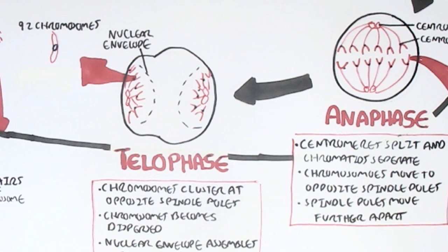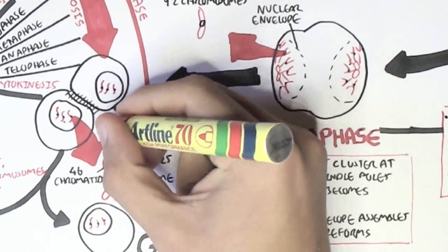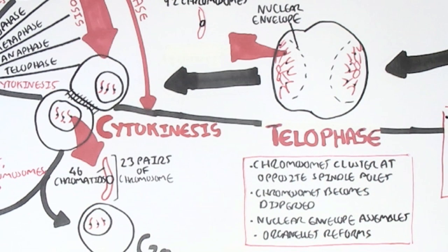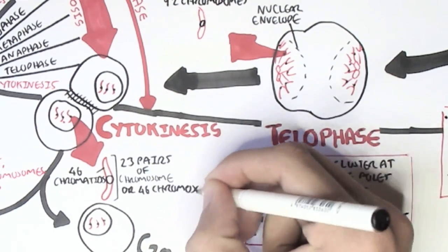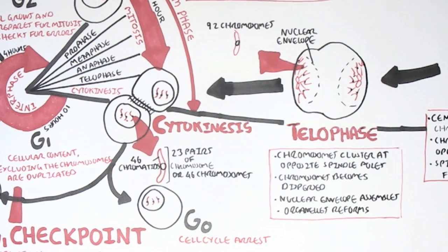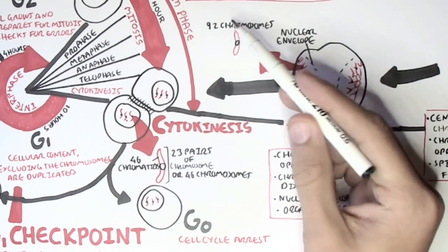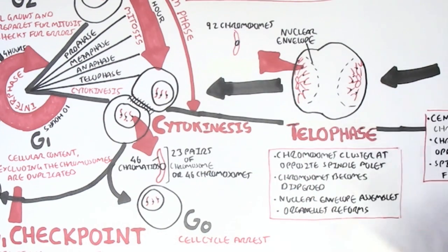This cell will then enter the last phase of M phase — not mitosis, but M phase — known as cytokinesis. Cytokinesis is not part of mitosis, but it is part of M phase, and it is essentially the separation of the cell into two daughter cells. Therefore, each of these daughter cells will have 46 chromosomes, or 23 pairs of chromosomes each. One chromosome will have one chromatid, so each daughter cell will have 46 chromatids. This is because the cell in telophase had 92 chromosomes, so dividing gives 46 to each daughter cell.